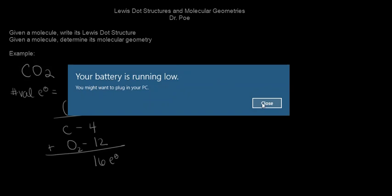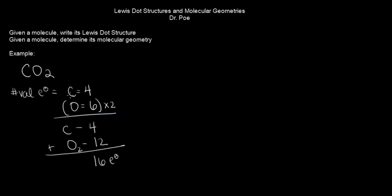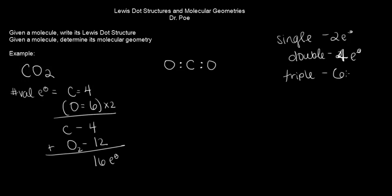Next step, we're going to determine the central atom. Central atom is the one that there's only one, and draw the other atoms surrounding it, equally spaced approximately. We know a single bond has 2 electrons, double is going to be 4 electrons, and a triple is going to have 6 electrons.